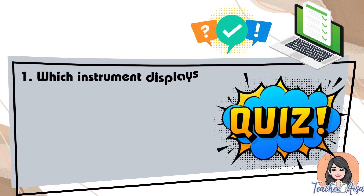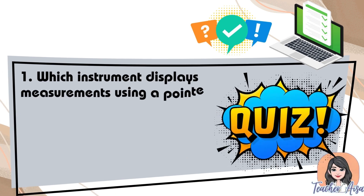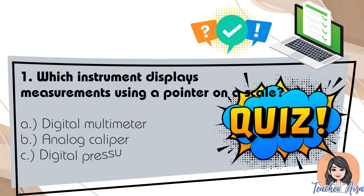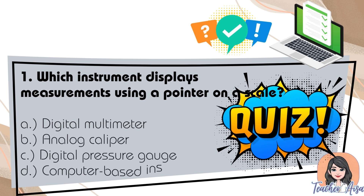Question one: which instrument displays measurements using a pointer on a scale? A. digital multimeter, B. analog caliper, C. digital pressure gauge, D. computer-based instrument.